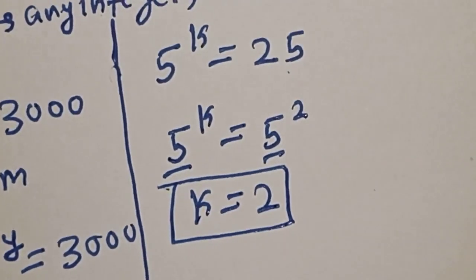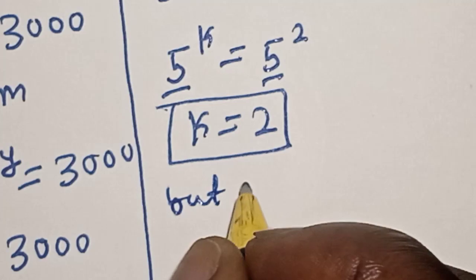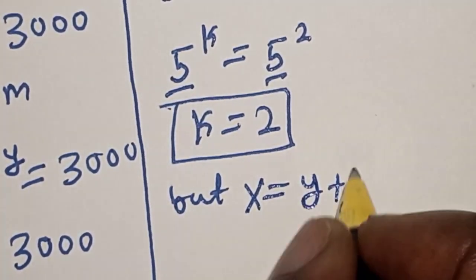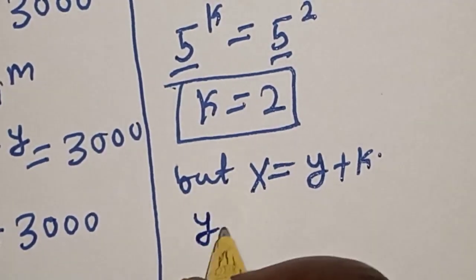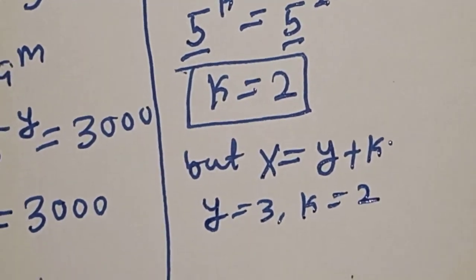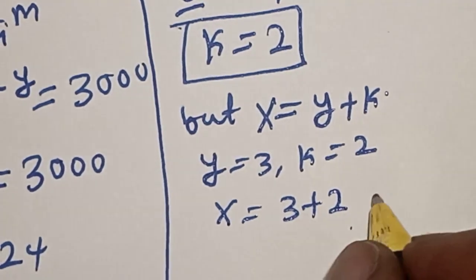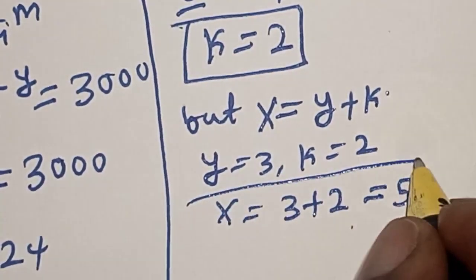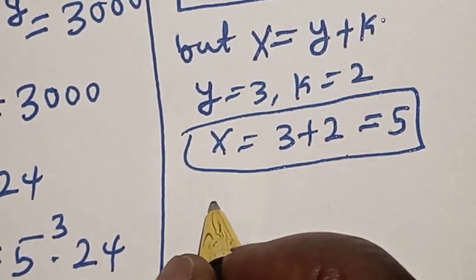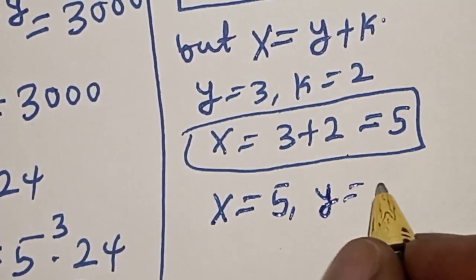We have found k equals 2. But x equals y plus k, and our y equals 3 and k equals 2. Therefore x equals 3 plus 2, which equals 5. That is the value of x. So our final answers are x equals 5 and y equals 3.